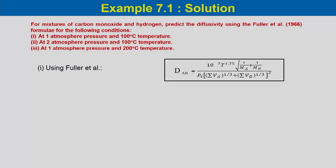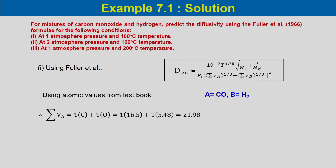The Fuller equation is D_AB = 10^(-7) × T^(1.75) × [1/M_A + 1/M_B]^(0.5) divided by P_T × [Σ(V_A)^(1/3) + Σ(V_B)^(1/3)]². Component A is carbon monoxide and component B is hydrogen. The molar volume of CO: Σ(V_A) = 1×16.5 + 1×5.48 = 21.98. The molecular weight M_A = 1×12 + 1×16 = 28 kg/kmol.